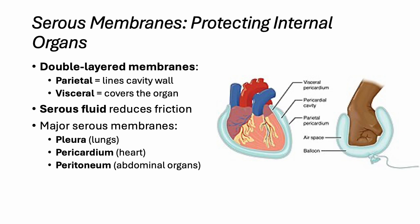Serous membranes act like protective bubbles that wrap around organs. They have a slippery fluid between layers to reduce friction, so your lungs can inflate, your heart can beat, and your intestines can move smoothly without irritating surrounding tissues. In this double-layered membrane, the parietal layer lines the cavity wall, and the visceral layer covers the organ itself. The fluid between them is called serous fluid. The major serous membranes are the pleural membrane surrounding the lungs, the pericardial membrane surrounding the heart, and the peritoneum surrounding the abdominal organs.